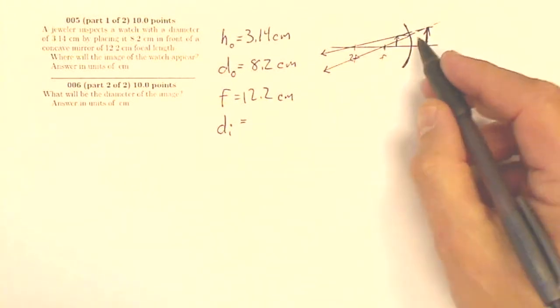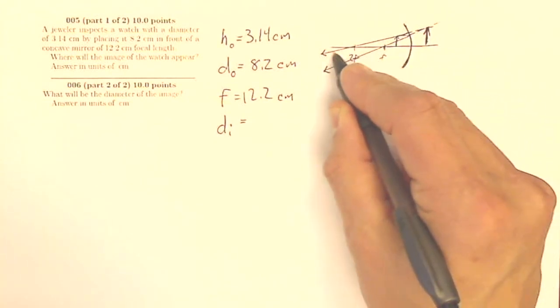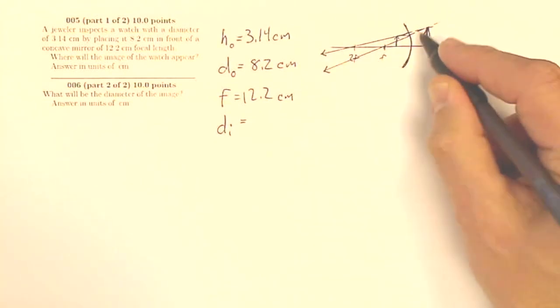So I know that my answer for my image is going to be negative because real images are going to show up at positive distances. Virtual upright images are going to show up at negative distances.